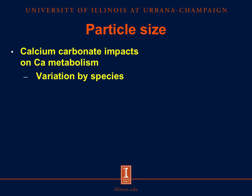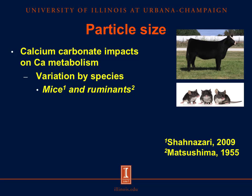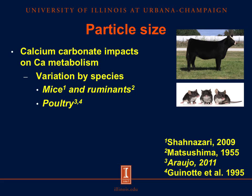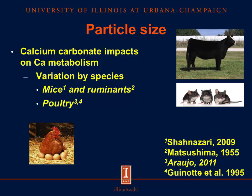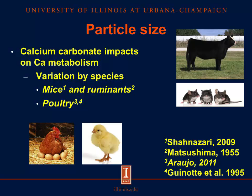It has been observed that the particle size of calcium carbonate impacts calcium metabolism differently according to animal species. For example, in mice and ruminants, the particle size of calcium carbonate does not influence the digestibility of calcium carbonate. However, in poultry, reducing the particle size of calcium carbonate does influence calcium metabolism. In hens, it is important to include larger particle sizes to provide a calcium reserve in the gizzard during overnight fasting to allow for egg formation. In contrast, broiler chicks optimize calcium digestibility, bone strength, and bone ash when smaller particle sizes of calcium carbonate are provided in the diet.